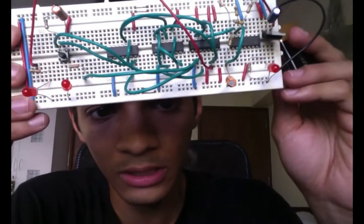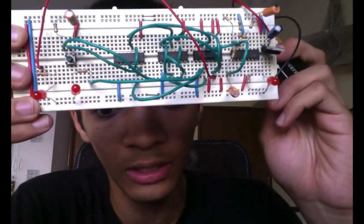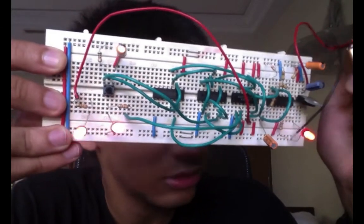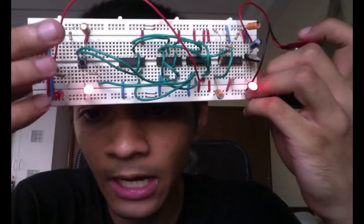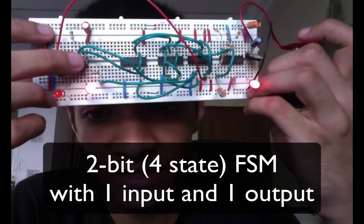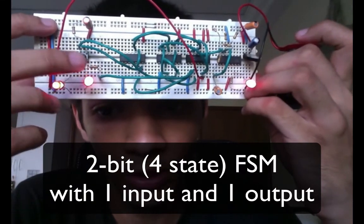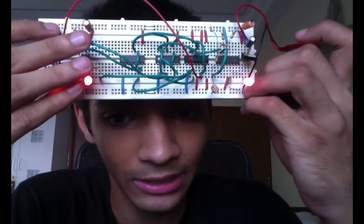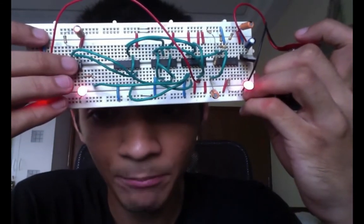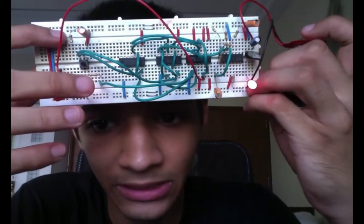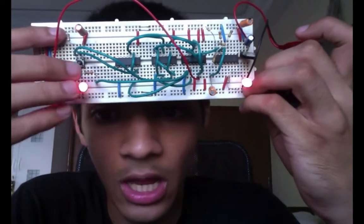Let's get into it. I'll show you the final product first. So as you can see here, this FSM is a two-bit FSM with one input and one output. Don't worry about this LED; we'll come back to that later. But basically, the input is this momentary push button, and the output is this LED here.